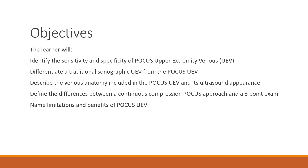Our objectives are for the learner to identify the sensitivity and specificity of point-of-care ultrasound upper extremity venous, differentiate a traditional sonographic upper extremity venous from a point-of-care upper extremity venous, describe the venous anatomy included and the ultrasound appearance of each vessel, define differences between the continuous compression and more limited exam approaches, and name the limitations and benefits of these exams.